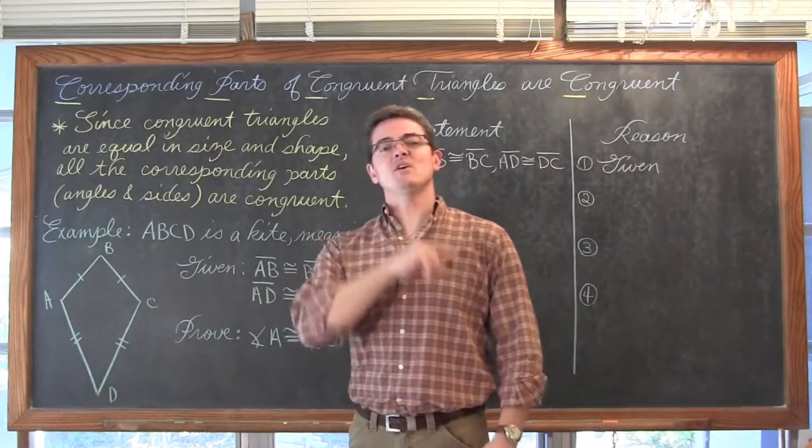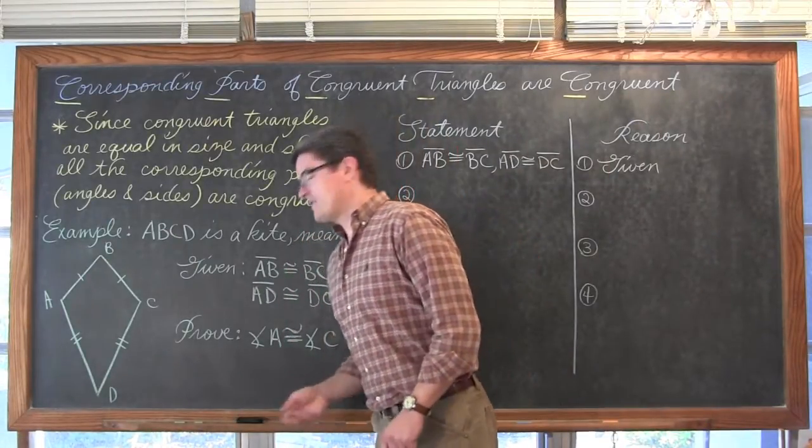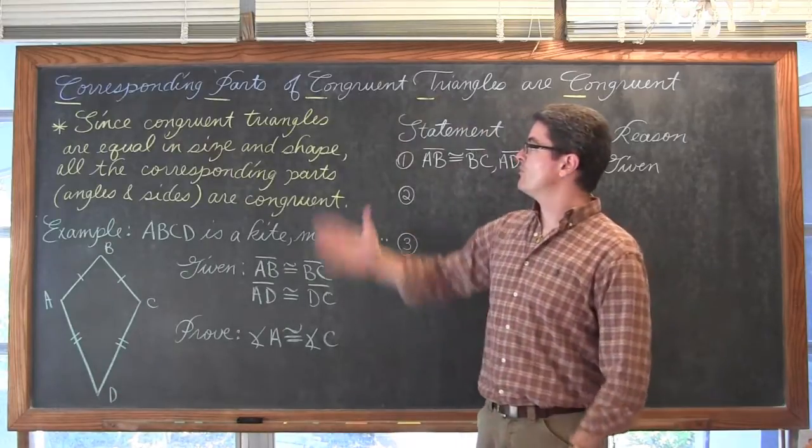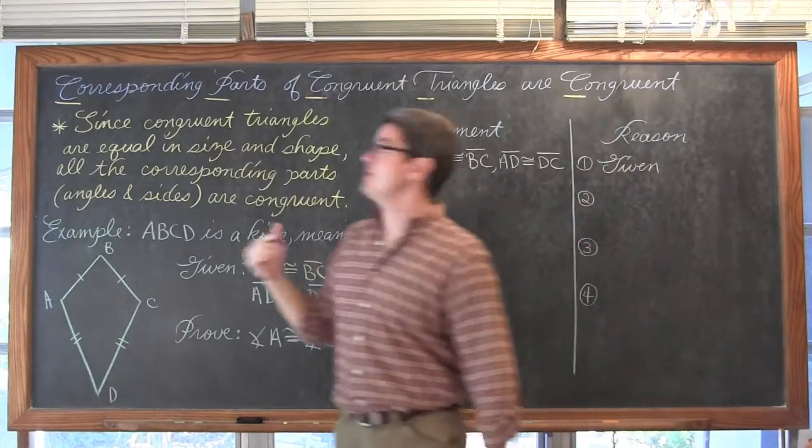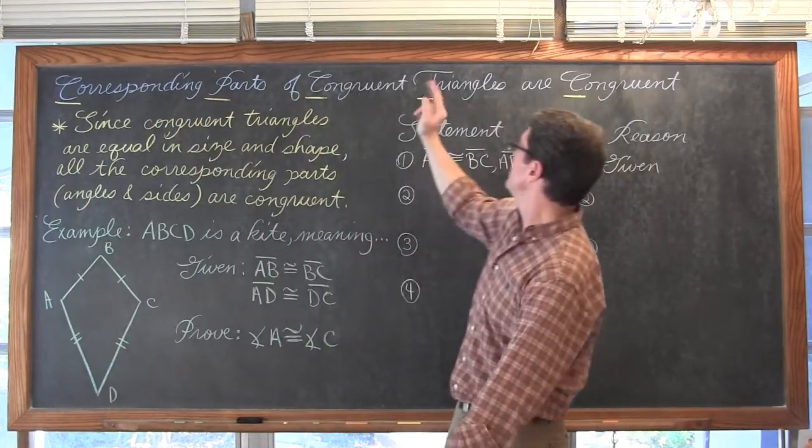BAM! Mr. Tarrou! In this video we are going to take a look at two proofs that somewhere along the line of that proof we use something called corresponding parts of congruent triangles are congruent, or abbreviated as CPCTC.